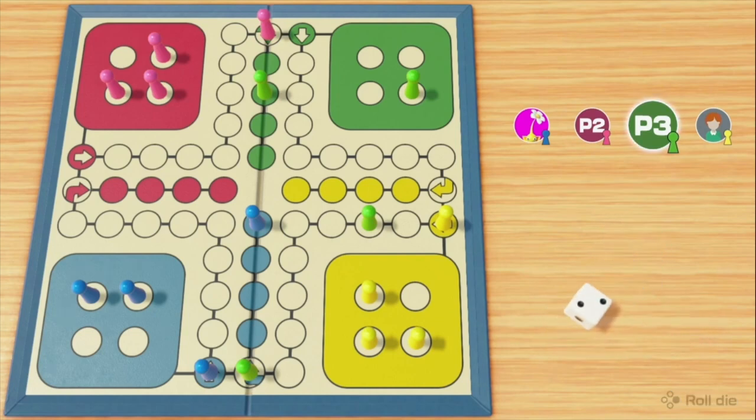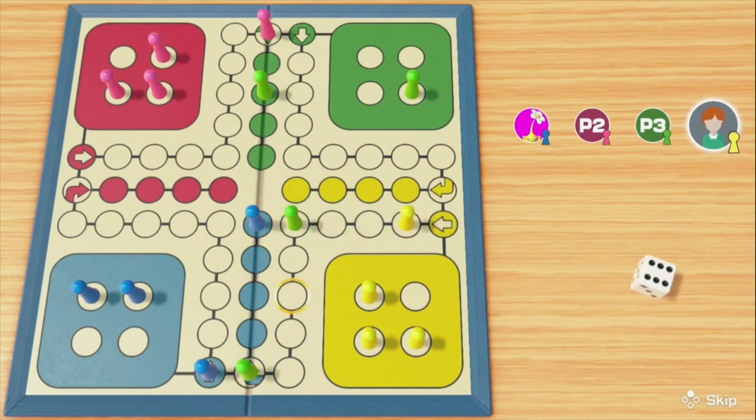I'm losing. I'm pink. Forrest is green. Justin is blue, and AI who is playing for Matthew is yellow.